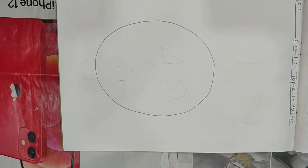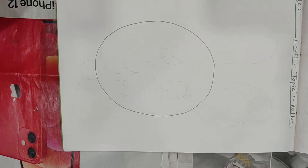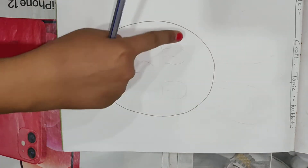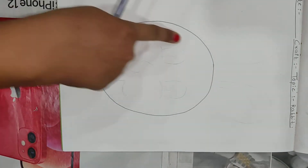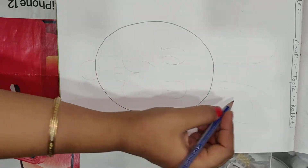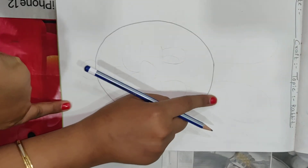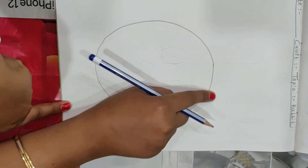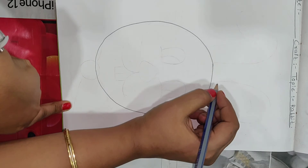Don't make it small — if you draw small it will not look good at all. So make it big. Do it my children. Very good! Now after making this oval, you will be drawing ears. One ear we will draw here and one we will draw here.